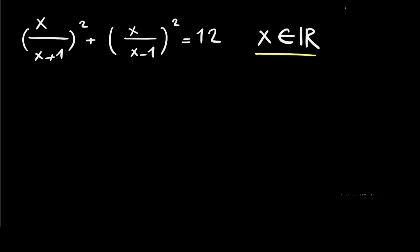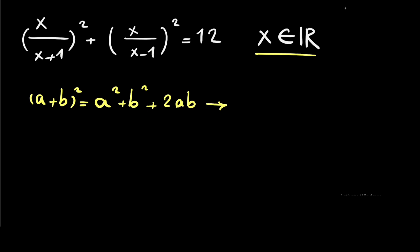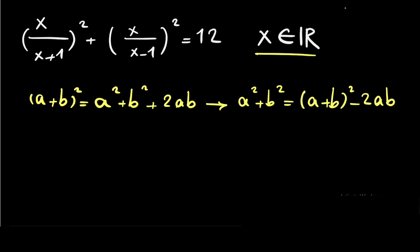For the first step, I want to show you that if you have (a + b) squared, you will have a squared plus b squared plus 2 times a times b. So you can write a squared plus b squared as (a + b) squared minus 2 times a times b.